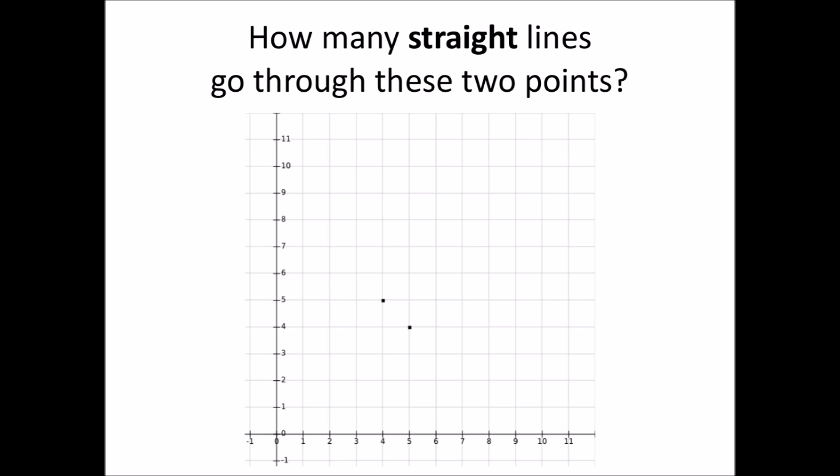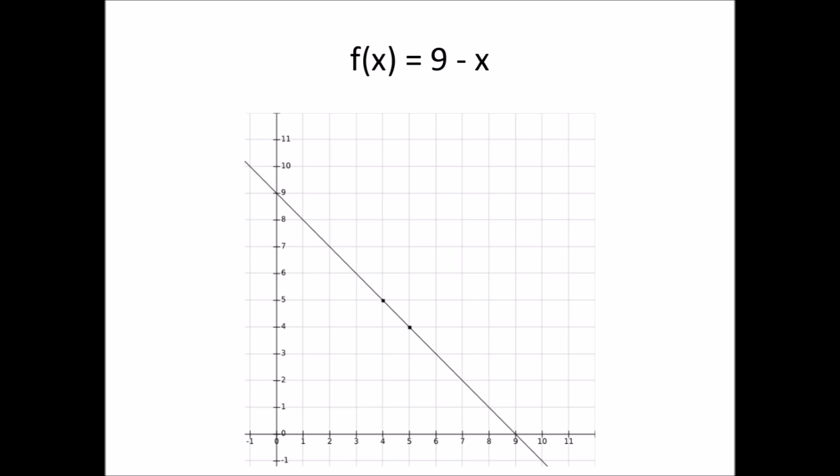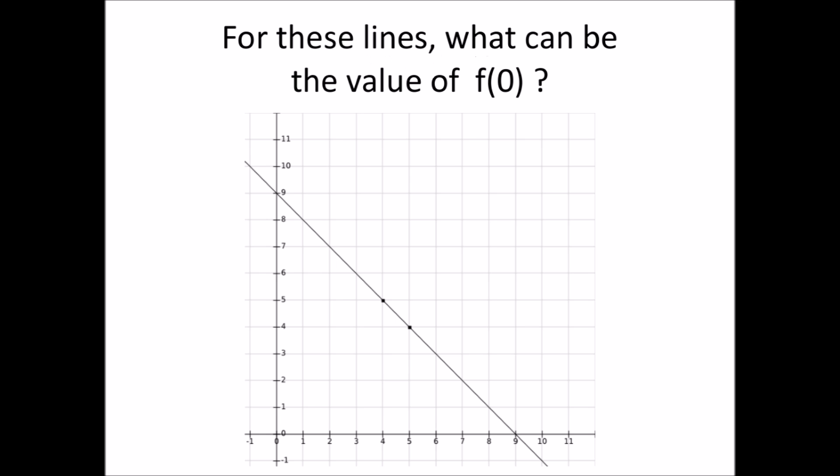Now we add another point here, (4, 5). Now we ask the question: how many straight lines go through these two points? Here there can only be one straight line, this one. And it's not hard to see that this line is described by the function f of x is 9 minus x. Now, since there is only one line that goes through these two points, what can be the value of f of 0? There can only be one value of f of 0, which is 9.